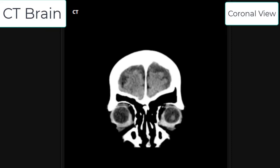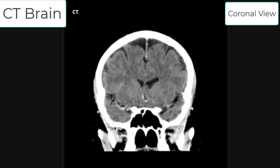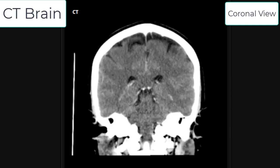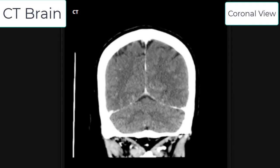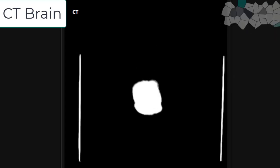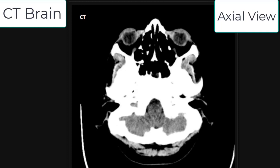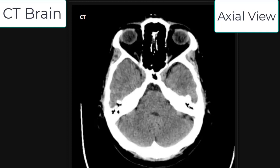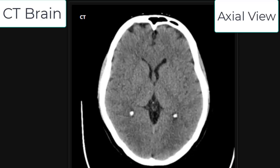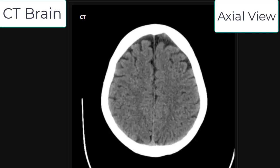This is the CT brain in coronal view, showing an anterior-to-posterior view with the outer bones, inner brain matter, outer gray matter, and inner white matter. This is the CT brain in axial or transverse view, showing the same structures. Importantly, this view also shows the ventricles inside the brain — this is a normal brain.